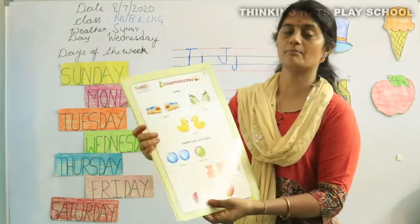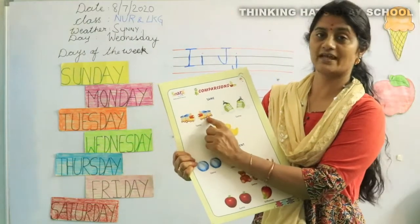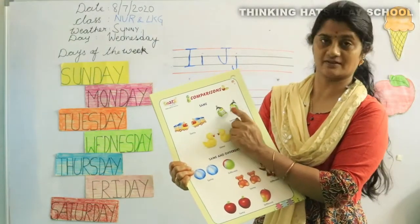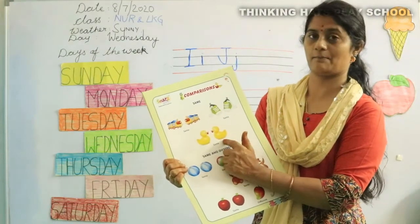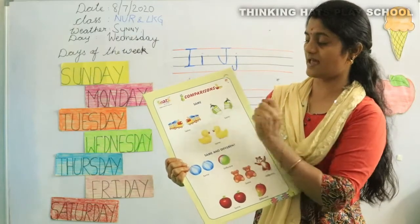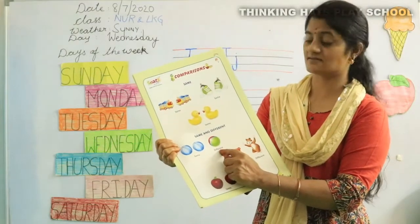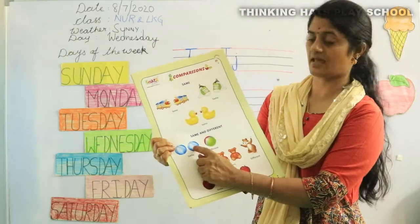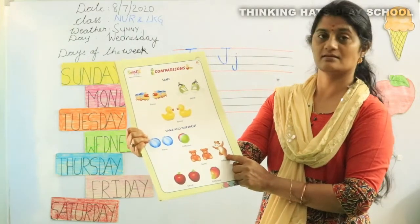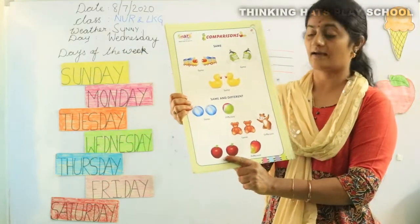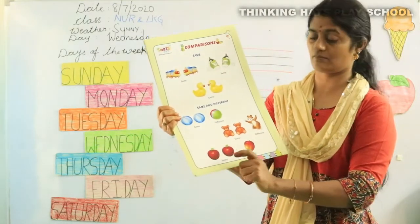Okay, let's see comparisons. What do you see here? These two toy trains — they are the same. A pair of shoes in green color — same. Two ducklings, toy ducks — same. Same and different. These two balls are blue — same. This one is green and red — different. These two little bears look the same, this one is different. An apple and a mango — apple is the same, mango is different.